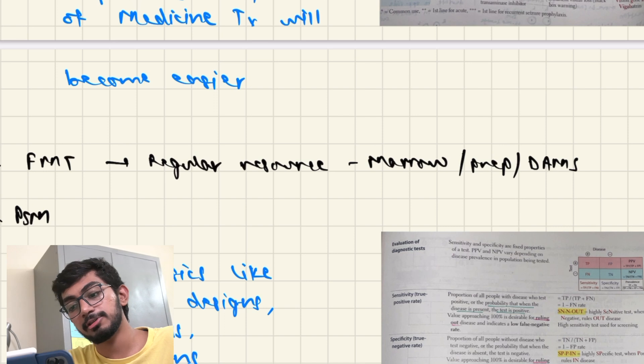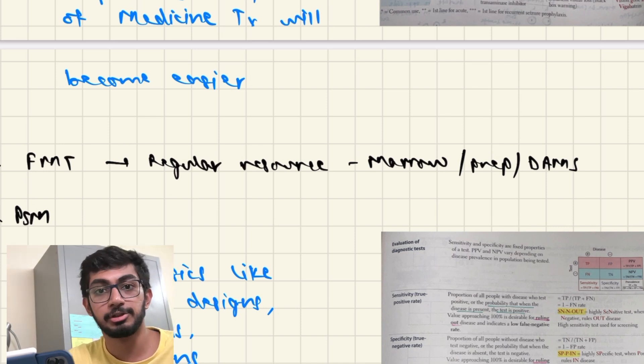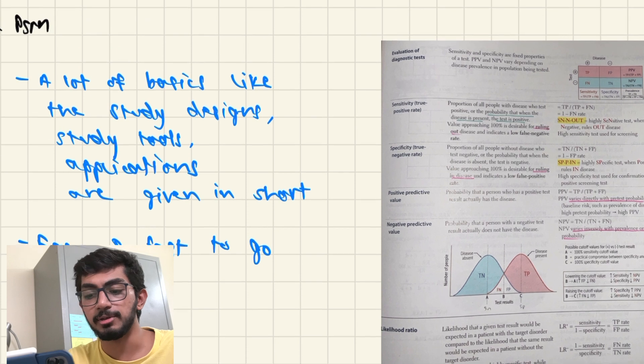FMT, you can use your regular resource like Marrow, Prep, Dams, whatever you've been using. And solve questions, that's all.